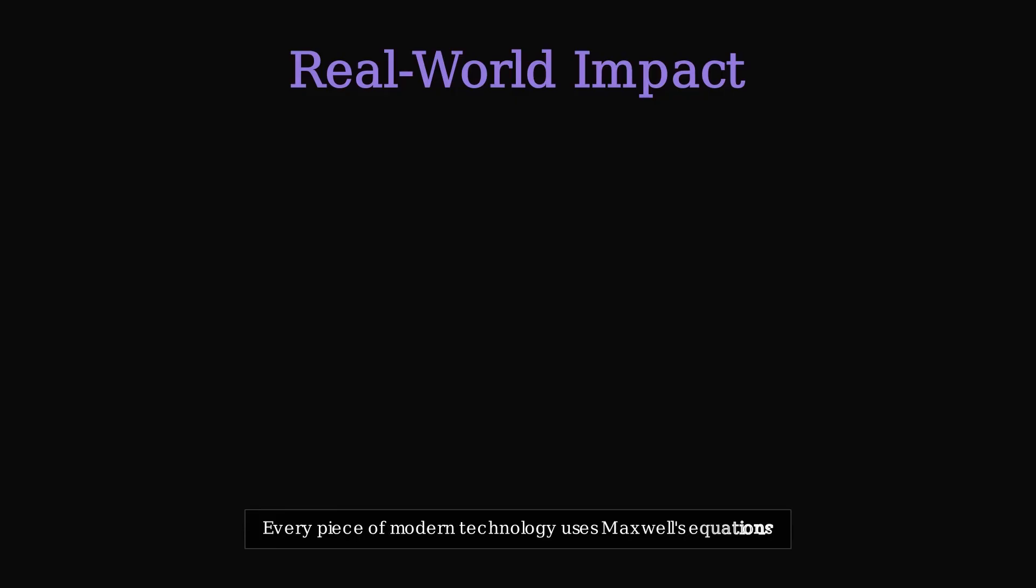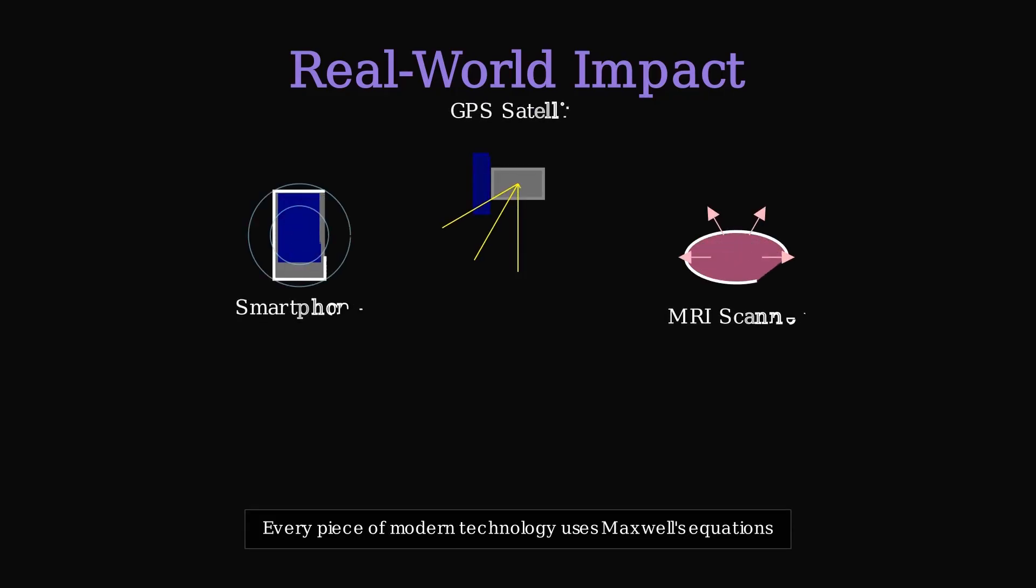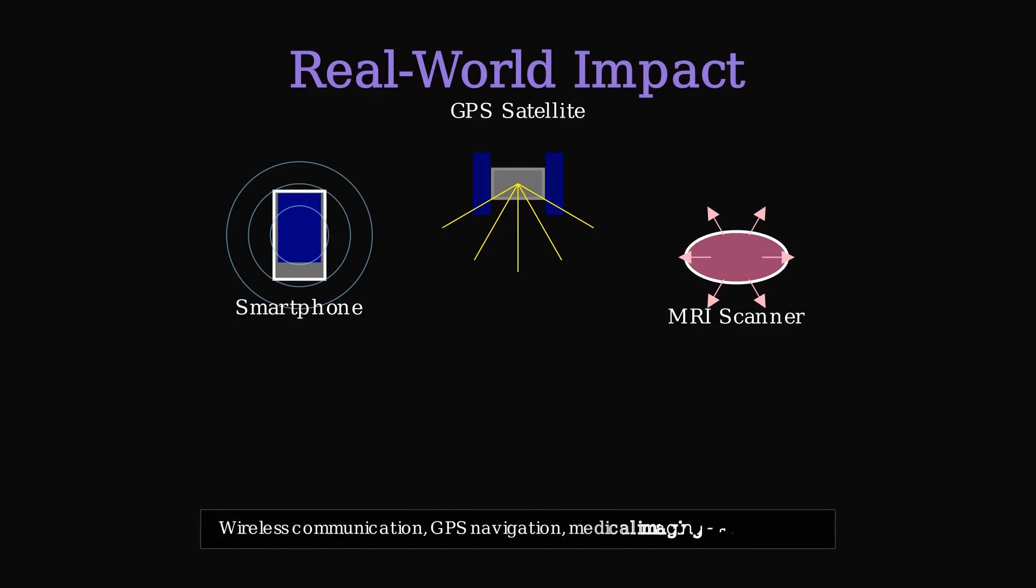Every piece of modern technology relies on Maxwell's equations. Your smartphone uses electromagnetic waves to communicate with cell towers and satellites. GPS navigation depends on precisely timed electromagnetic signals.